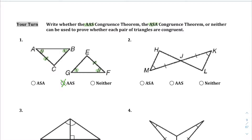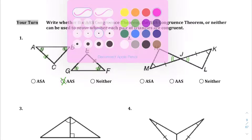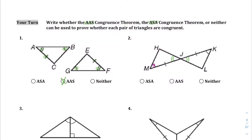For question number two, we can show that one angle is congruent to the other because they are vertical angles. In this case we have angle, side, angle — and same angle, side, angle — which is what we're getting at. So the correct choice here is angle-side-angle.